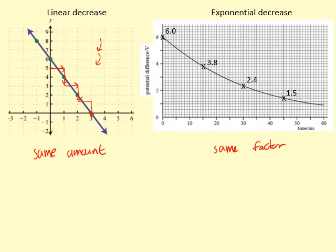So how can we show this? For example, when you go from 0 to 15, it's decreased by a factor of 3.8 over 6, which is 0.63. When you go from 15 to 30, which is another increase by 15, the same amount, you get 2.4 over 3.8,